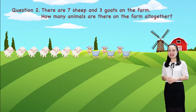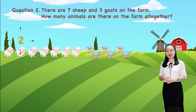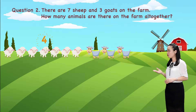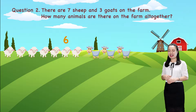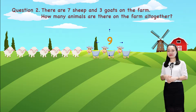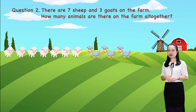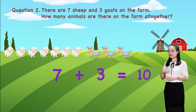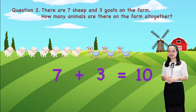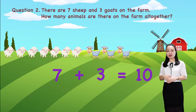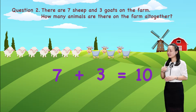Let's find the answer together. Let's count. 1, 2, 3, 4, 5, 6, 7, 8, 9, 10. So, there are 10 animals on the farm all together. We write in numerals. We say, 7 plus 3 equals 10. Here, 10 is the sum.